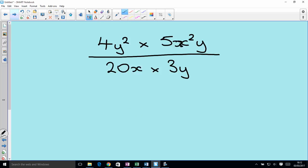Next one. 4y squared z times 5x squared y over 20x times 3y. Let's do the multiplying first on the top and separately on the bottom and see what we get.